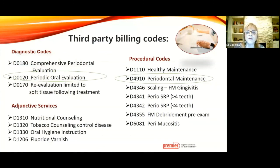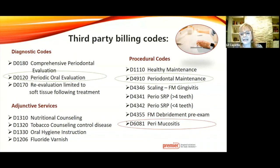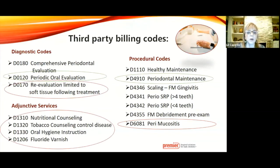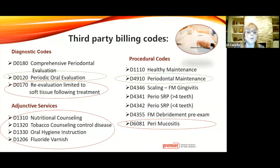For third-party billing: whether you're using a periodic oral evaluation or periodontal maintenance code, if a person is classified as peri-mucositis, there is a dental billing code for that. All those adjunctive services are also effective dental coding—if this implant is in danger because a patient needs tobacco counseling or needs a half hour for elaborate oral hygiene instruction, use those codes. Even if they don't pay them, it's good for them to be listed so the metrics show that these are important services.